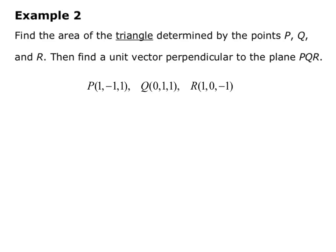In example 2, we're asked to find the area of the triangle determined by the points P, Q, and R, and then find a unit vector perpendicular to the plane PQR. Notice that they say triangle, and a triangle is half of a parallelogram, so we have to keep this in mind as we work through the problem.